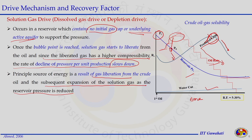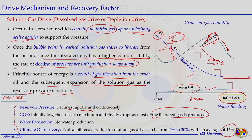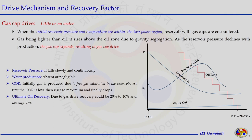The oil rate declines over time, reaching a maximum when reservoir pressure is above bubble point. The pressure continuously declines and becomes constant as there is no active aquifer, and only a small amount of water gets produced. Researcher Cole in 1964 summarized these parameters: reservoir pressure declines rapidly and continuously, GOR is initially low then rises to maximum before declining, no water production, and ultimate recovery ranges from 5 to 30 percent with an average of 16 percent. This type of reservoir is a good candidate for water flooding.